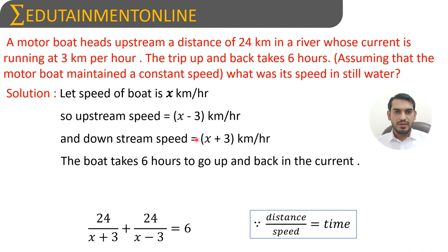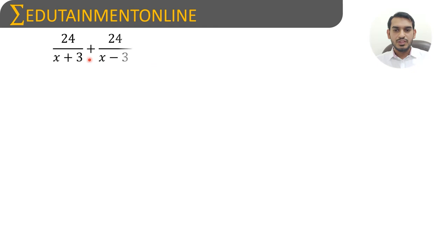This represents the time taken for the upstream journey plus the time taken for the downstream journey. The time taken to travel 24 kilometers at speed x plus 3, plus the time taken to travel 24 kilometers at speed x minus 3, is equal to six hours. So: 24/(x+3) + 24/(x-3) = 6.